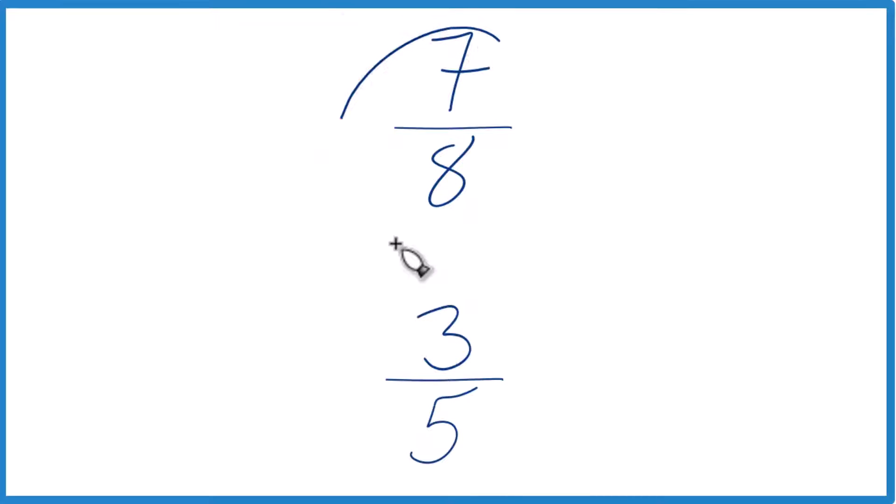Here's how you can figure out whether 7 eighths is greater than or less than 3 fifths. You could maybe reason it out, or you could just divide 7 by 8 in a calculator, get a decimal, divide 3 by 5, get a decimal, and compare the decimals. That would tell you whether 7 eighths is greater than or less than 3 fifths.